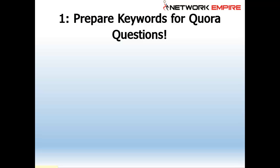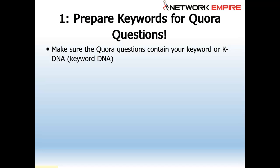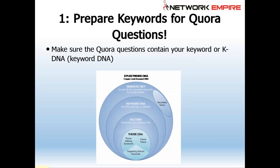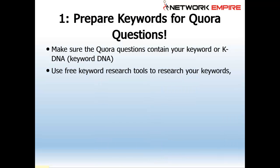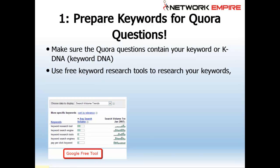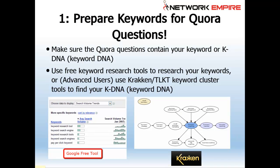Step one of the Quora inception process is to prepare keywords for Quora questions. Make sure the Quora questions contain your keyword or your KDNA. Keyword DNA is terminology for our advanced enterprise platform keyword and theme clustering technology that extracts thousands of money keywords across tens of thousands of web pages. You can use free keyword research tools — Google has a free tool which is just fine. Advanced users can use our Kraken or TLKT keyword technology, which are vertical online market analysis tools, not just keyword research tools.